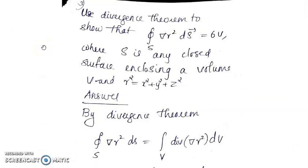The next question: use the Divergence Theorem to show that the surface integral over S of ∇(R²) · dS equals 6V, where S is any closed surface enclosing a volume V, and R² = x² + y² + z². This integral is in the form F · dS, where F = ∇(R²).